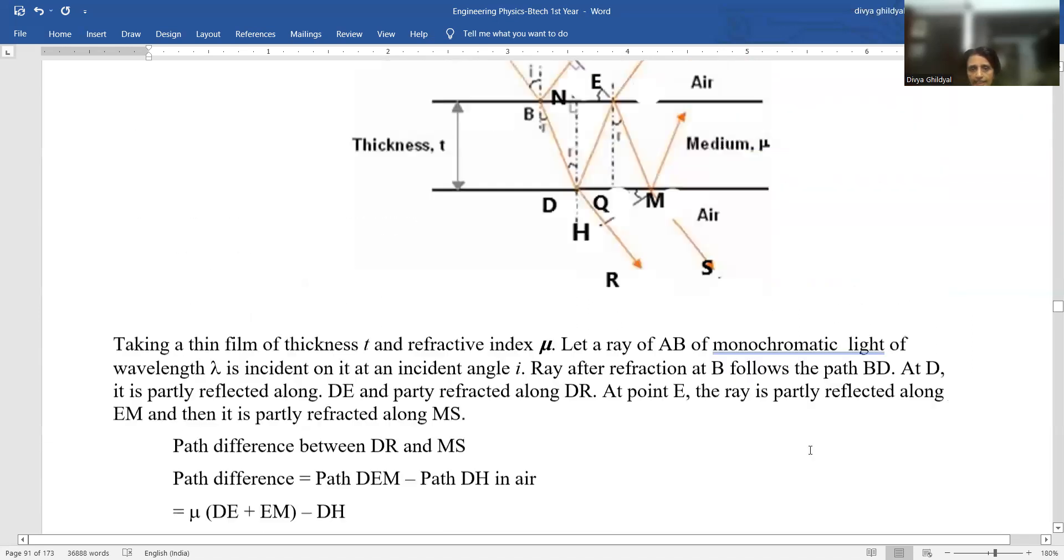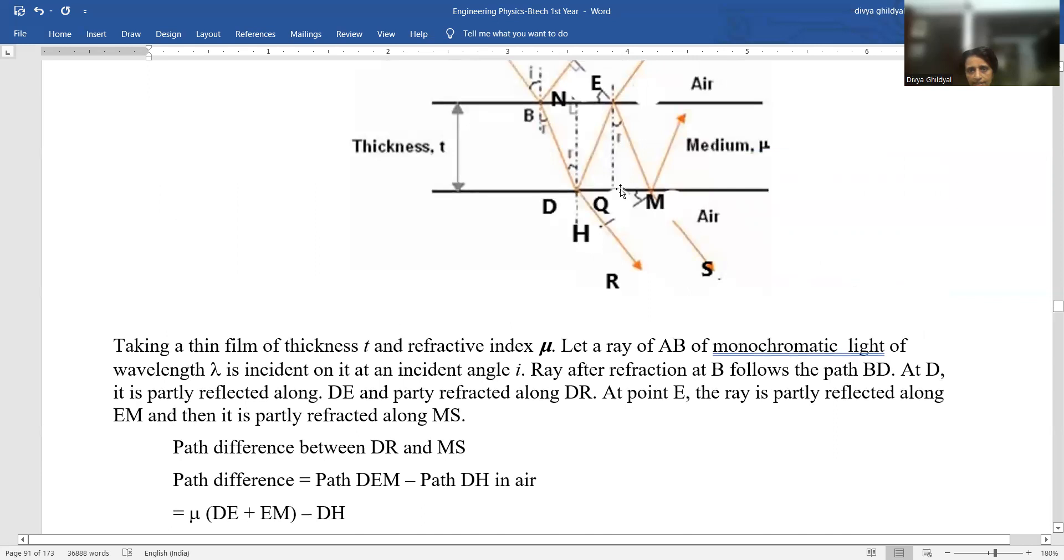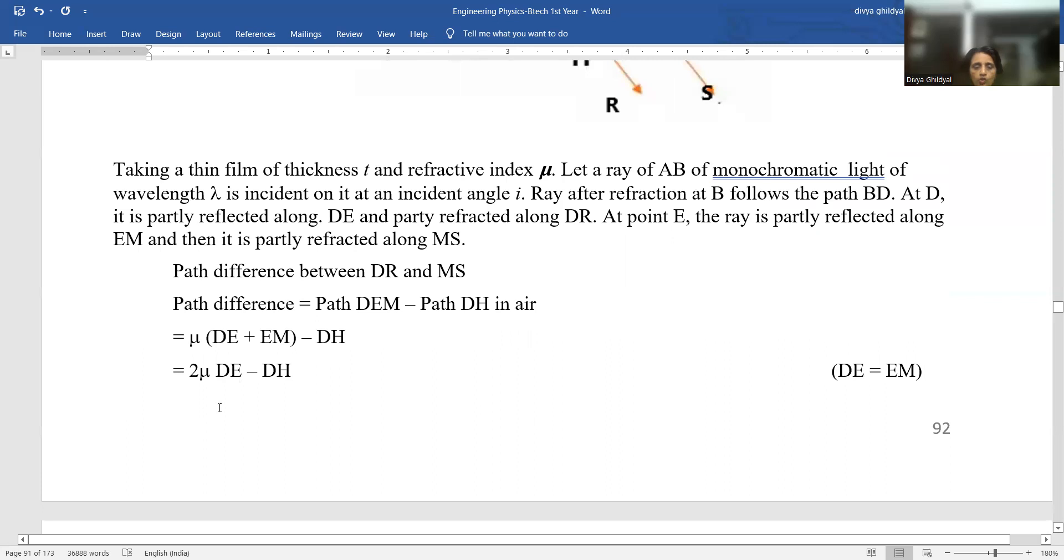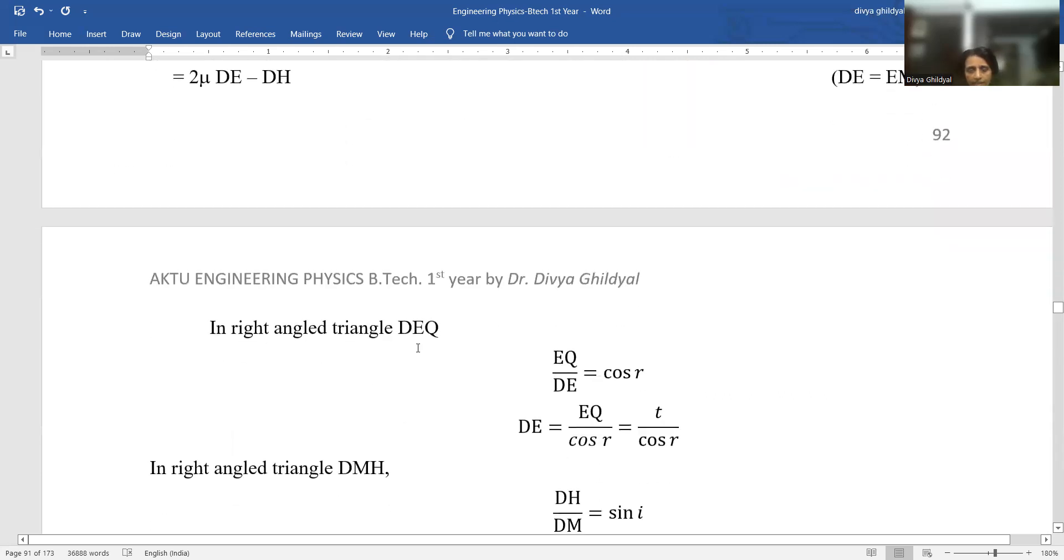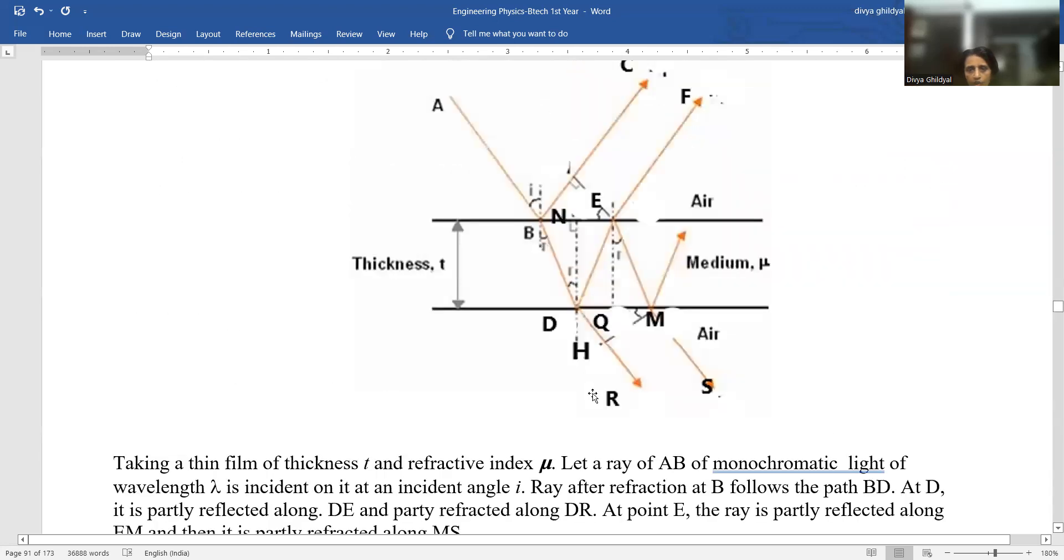So it becomes DE is EM, congruent triangles. DE is equal to EM because they are two congruent triangles, similar sides, similar angles. Hence DE becomes equal to EM. So 2 mu DE minus DH.